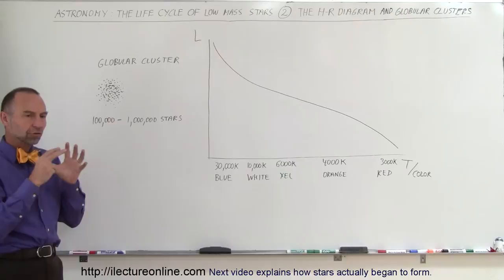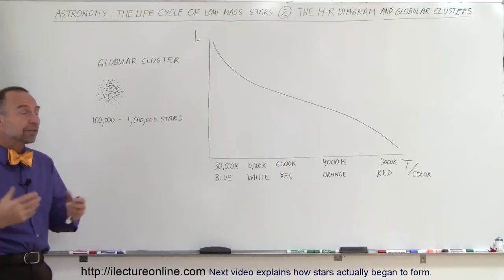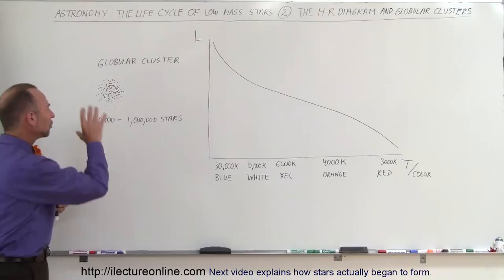Globular clusters are clusters of stars that are enormously dense and exist throughout many galaxies around us, including our own. Our own galaxy has about 150 of these globular clusters spread throughout the disk and the halo of the galaxy.